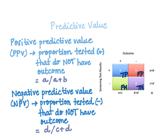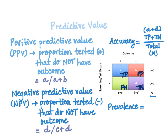With our two-by-two table fully filled, we can additionally calculate two more measures. One is accuracy, which equals true positives plus true negatives divided by the total N. And lastly, we can calculate prevalence, which is the total of positive outcomes (A plus C) divided by the total N.